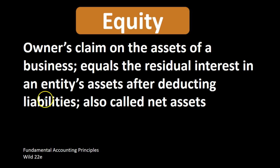A couple key points in the definition here. First, we're talking about an owner's claim to the assets. That implies that we're looking at the owner as separate from the business — the business being a separate entity in the eyes of the definition of equity. That means the business owes the owner the claims to an asset, similar to the way the business owes a third party in terms of liabilities or creditors.